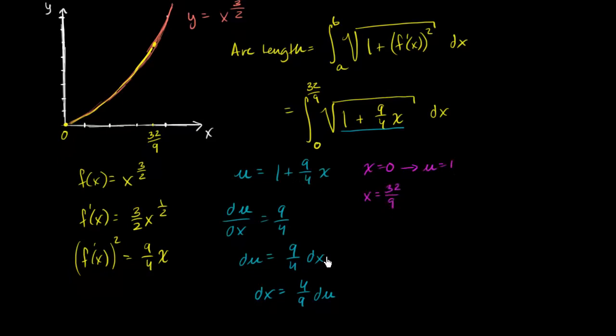And when x equals 32 over nine, and this is why that number was picked, what's u going to be equal to? 32 over nine times nine fourths is going to be 32 over four, which is going to be eight plus one. So that worked out very nicely. Imagine that.